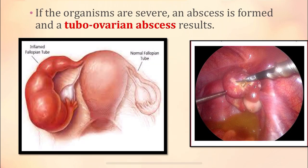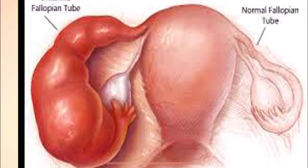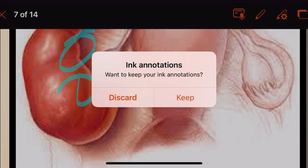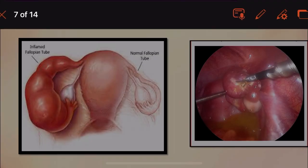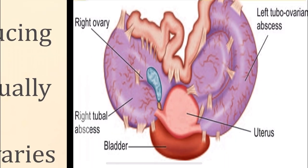If the organisms are very severe, an abscess will be formed, known as a tubo-ovarian abscess. It is a complex infectious mass of the adnexa, occurring as a result of the infection of the fallopian tube. You can see the tubo-ovarian mass: first the inflammation of the fallopian tubes, and then masses are formed. You can see the right tubal abscess and the left tubo-ovarian abscess.